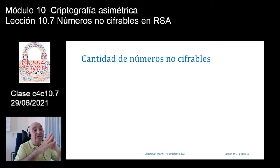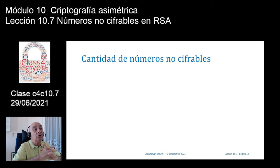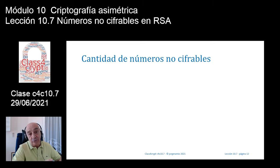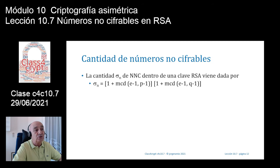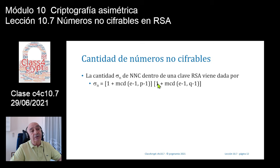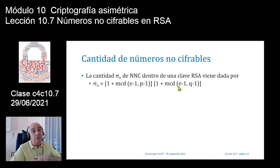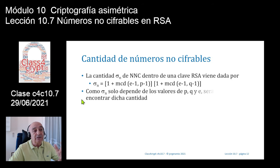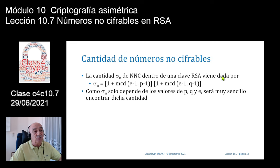Veamos entonces cómo encontramos esa cantidad de números no cifrables. La ecuación es σ(n) = (1 + mcd(e-1, p-1)) × (1 + mcd(e-1, q-1)). Son números que yo conozco porque la clave me la acabo de generar: conozco Q, la clave pública E y P. Hacer esta operación es totalmente elemental e independientemente de que P y Q sean números de 1024 bits, no hay ningún problema. Es tremendamente rápido.